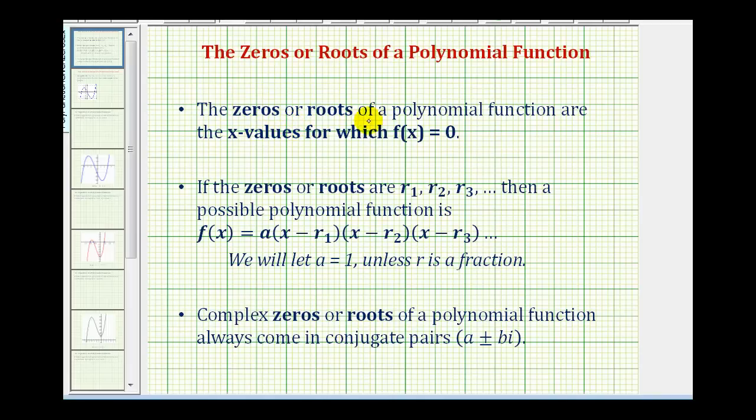First, the zeros or roots of a polynomial function are the x values for which f of x is equal to 0. So they're the values of x that make the function equal to 0.